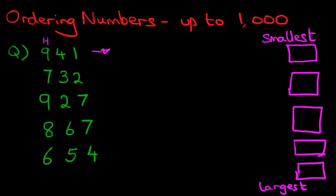So, let's go through each of the numbers and write down how many hundreds they've got. Nine hundred and forty-one has got nine hundreds. Seven hundred and thirty-two has got seven hundreds. Nine hundred and twenty-seven, there are nine hundreds. Eight hundred and sixty-seven, there are eight hundreds. And lastly, six hundred and fifty-four has six hundreds. So, that is the hundreds.